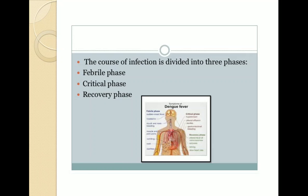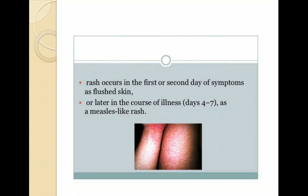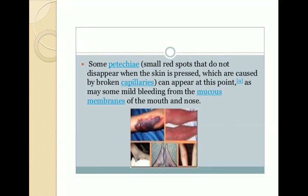The course of infection is divided into three phases: febrile, critical, and recovery. In the febrile phase, high fever and generalized pain with headache appear, usually lasting 2 to 7 days. Then rashes appear, and later in the course of illness at 4 to 7 days, a measles-like rash appears. Some petechiae — small red spots that do not disappear when skin is pressed, caused by broken capillaries — can appear, along with mild bleeding from mucous membranes of the mouth and nose.